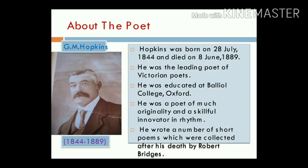Here is the picture of G.M. Hopkins. Hopkins was born on 28 July 1844 and died on 8 June 1889. He was the leading poet of Victorian poets. He was educated at Balliol College, Oxford. He was a poet of much originality and a skillful innovator in rhythm. He wrote a number of short poems which were collected after his death by Robert Bridges.